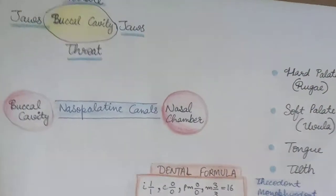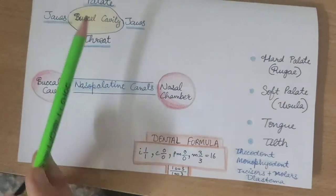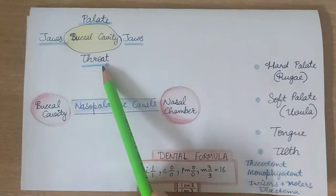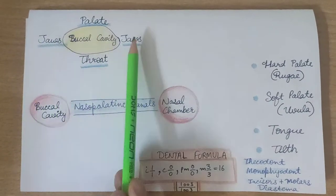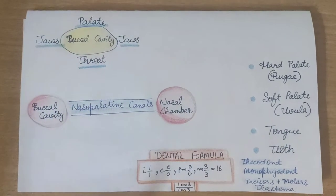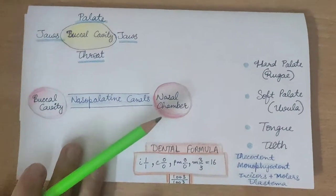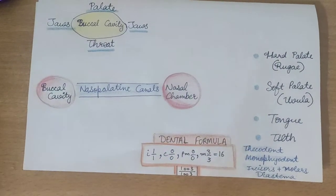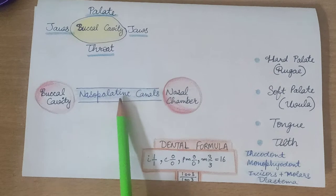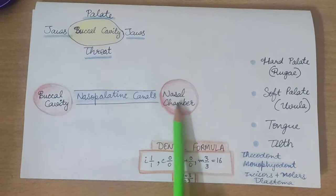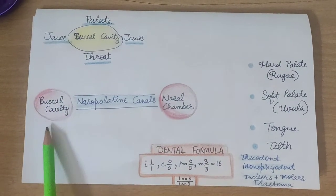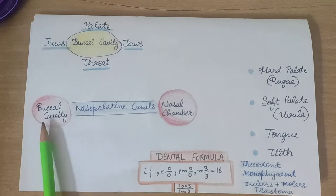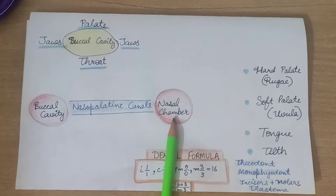Next we have the buccal cavity. Above the buccal cavity we have the palate, and below it is the throat. On both sides of the buccal cavity we have jaws. The buccal cavity is linked to the nasal chamber by the nasopalatine canal — 'naso' referring to the nasal chamber and 'palatine' since the buccal cavity has a palate.